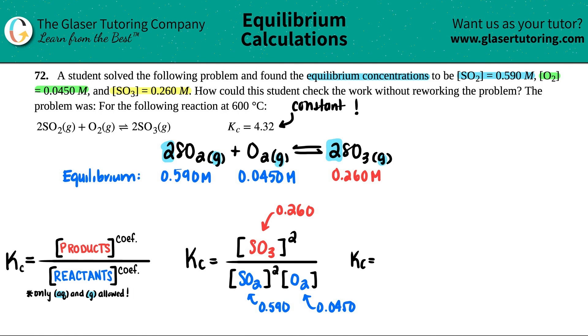Let's see. So I get 0.260 and that's all squared, then for the bottom I have 0.590 and that's also squared, and then I have to multiply by 0.0450.